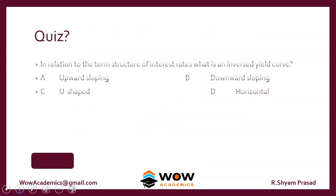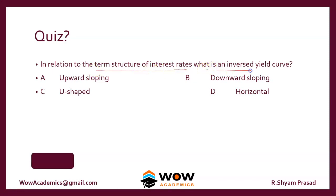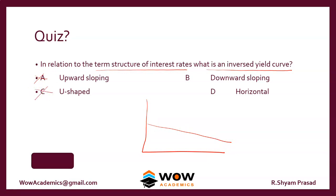Quiz question: In relation to the term structure of interest rates, what is an inverted yield curve? An inverted yield curve is not upward sloping, not U-shaped, not horizontal — it is downward sloping. The answer is B.